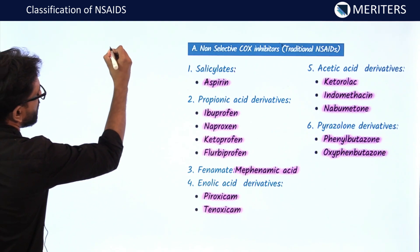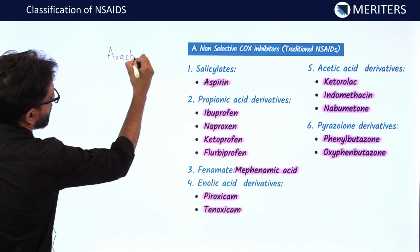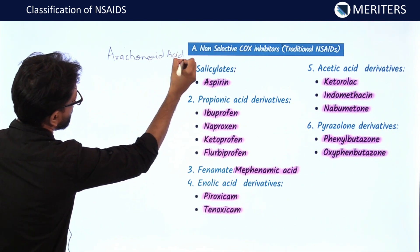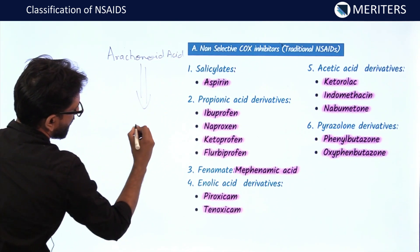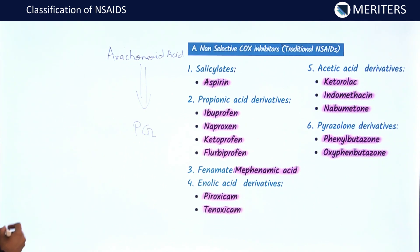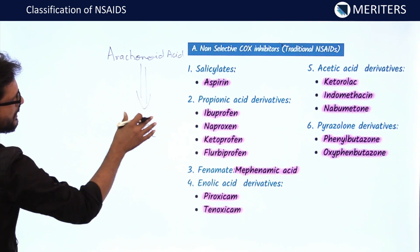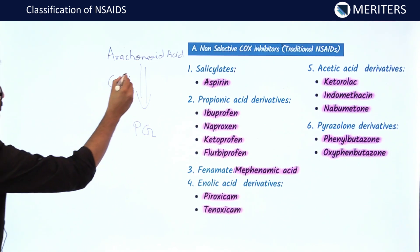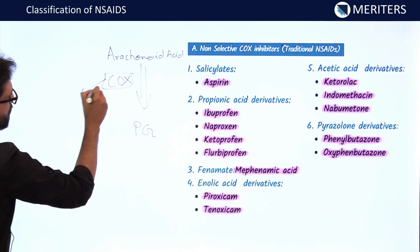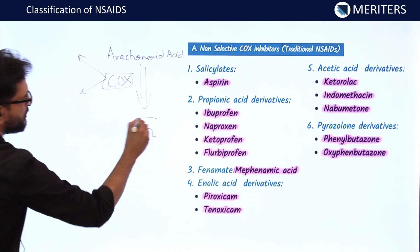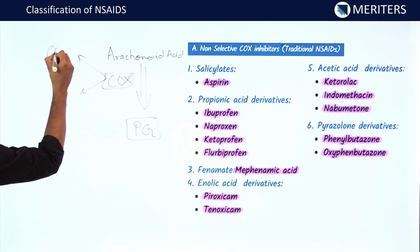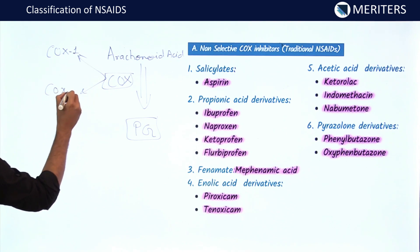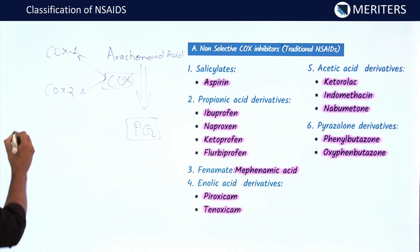Suppose we have a component known as arachidonic acid. This arachidonic acid gives rise to prostaglandins. There are certain enzymes which catalyze this reaction — these are known as cyclooxygenase. There are two types of cyclooxygenase responsible for the formation of these prostaglandins: COX-1 and COX-2.